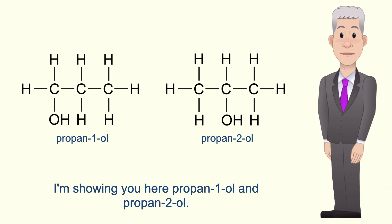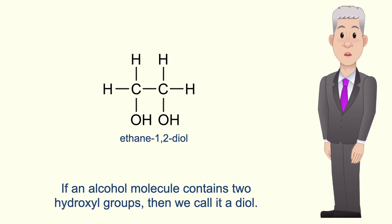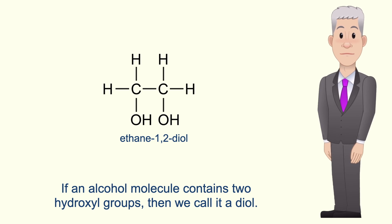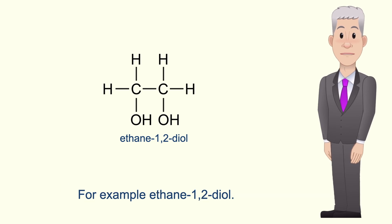I'm showing you here propan-1-ol and propan-2-ol. If an alcohol molecule contains two hydroxyl groups then we call it a diol. For example ethane-1,2-diol.